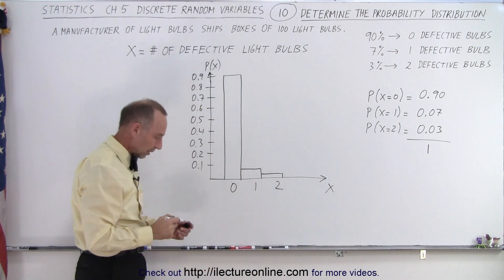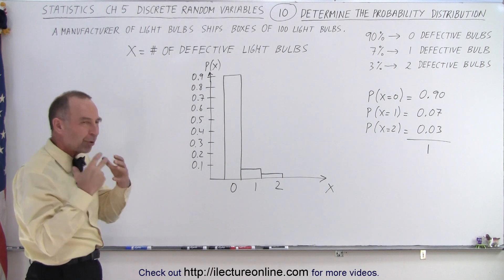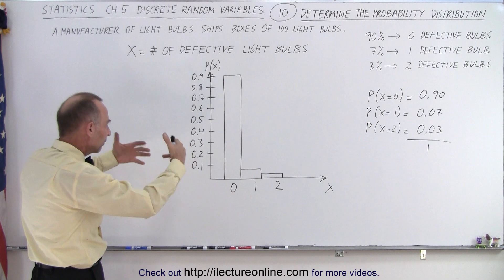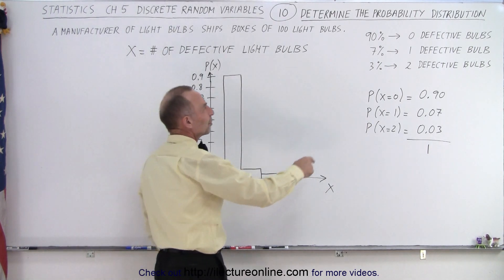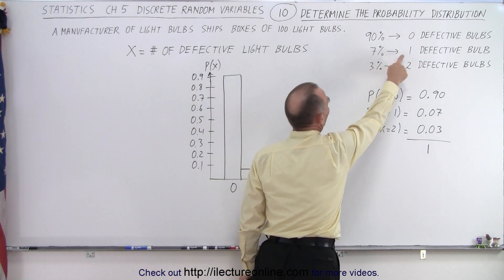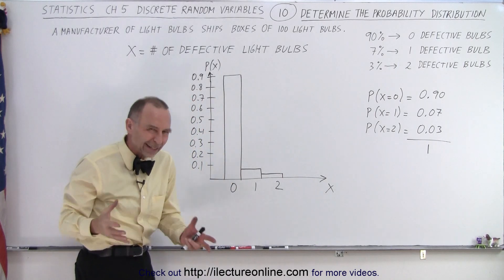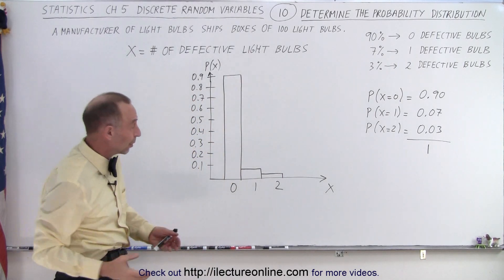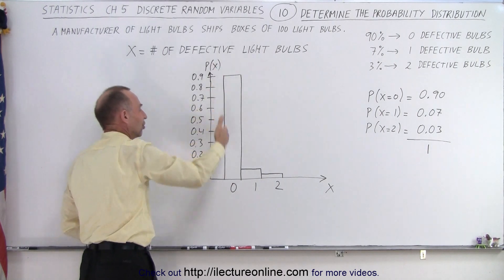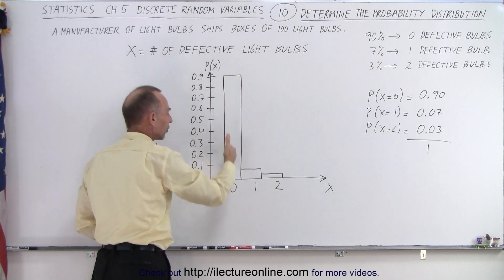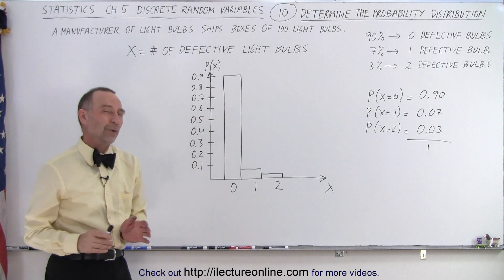So notice, when we draw a histogram bar graph, we have a much better realization, a much better pictorial of what that looks like. You may think that 7% of the boxes have one defective bulb and 3% have two defective bulbs, that that's really bad. Well, in a sense, it kind of is, because you don't want any defective light bulbs. But if you see it visually, you can see that the number of boxes that are shipped that have no defective light bulbs is far greater than the number that have one or two defective light bulbs.